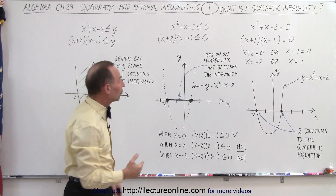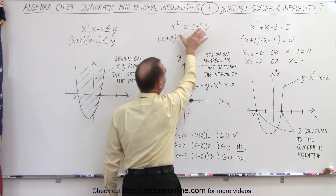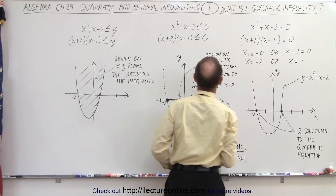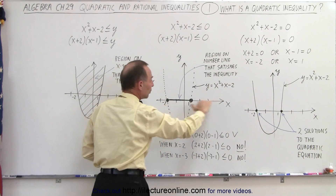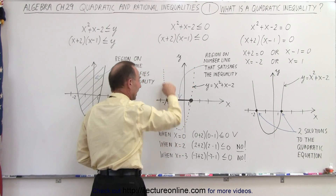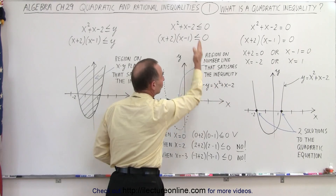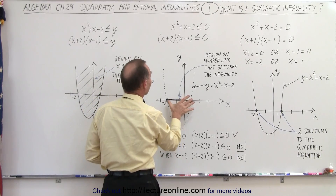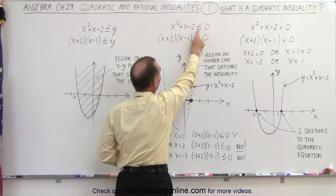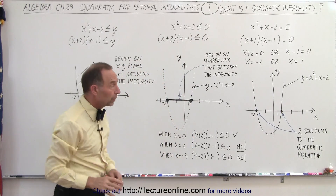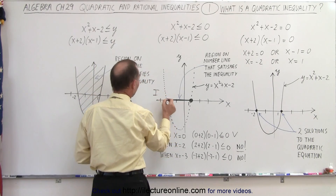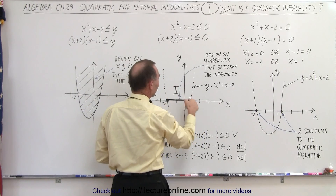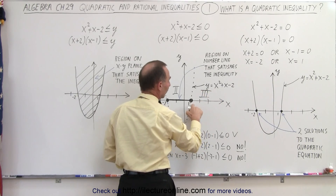To do that, we find the critical points. We replace the inequality sign with an equal sign, so we end up with x squared plus x minus 2 equals 0 again. We find the two points on the number line that represent the solution to this equivalent equation. Now we notice that we have three regions on the number line. Also notice that I've drawn a dashed line for the equation y equals x squared plus x minus 2, which is the boundary of that inequality. We have the two points on the number line: all values less than negative 2 to the left, values between the two critical points in the middle, and all values of x greater than 1 to the right.